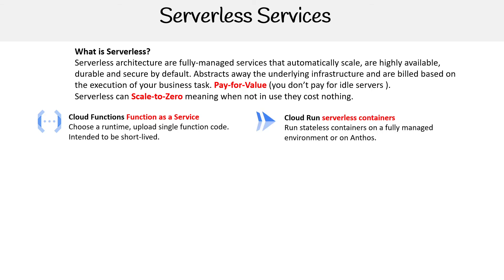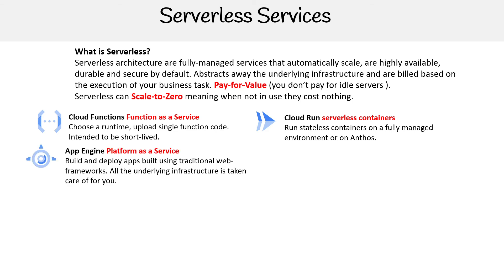You have Cloud Run — this is for serverless containers, running stateless containers in a fully managed environment, or via Anthos. You have App Engine, a platform as a service to build and deploy apps using traditional web frameworks, with all the underlying infrastructure taken care of for you. Platform as a service is not always serverless, but App Engine specifically has a serverless offering, which is the standard version.